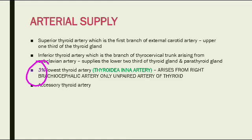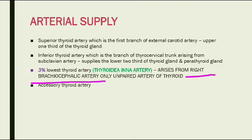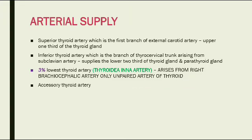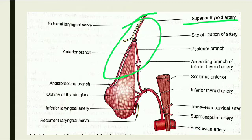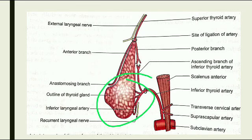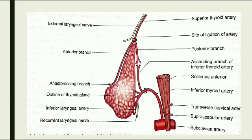The lowest thyroid artery, also called the thyroid ima artery, occurs in only about three percent of cases. It arises from the right brachiocephalic artery and is the only unpaired artery of the thyroid. There is also an accessory thyroid artery that supplies the gland. In the diagram, the superior thyroid artery supplies the upper one-third and the inferior thyroid artery — arising from the subclavian artery — supplies the lower two-thirds.